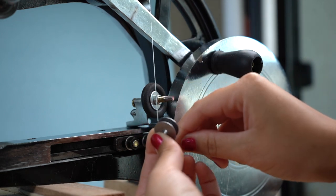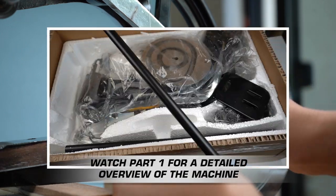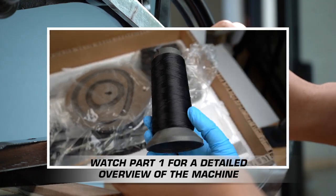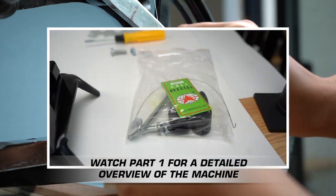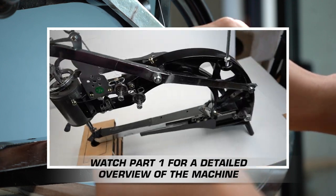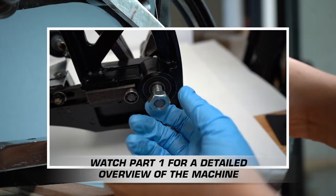We're going to want to use this thread for both our bobbin and to thread the machine. If you're unfamiliar with the bobbin or where it is, be sure to watch part one of this video series where I thoroughly go over all the parts on the machine. This video is going to be more about how to sew materials rather than how each part of the machine works.